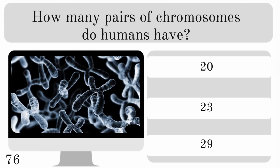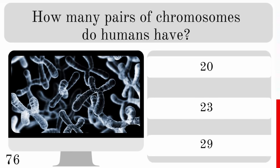How many pairs of chromosomes do humans have? 20, 23 or 29? And we have 23 pairs.